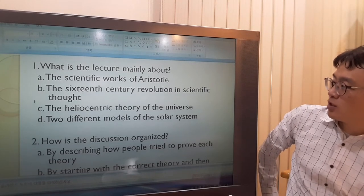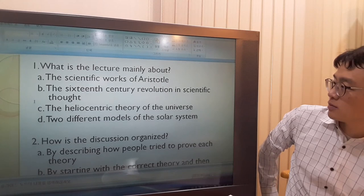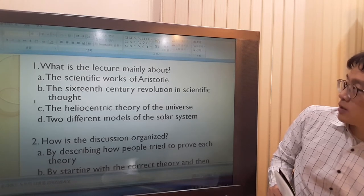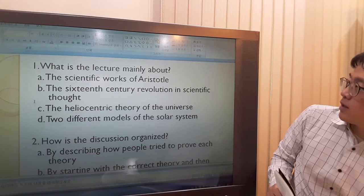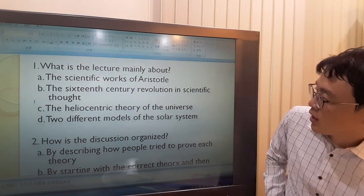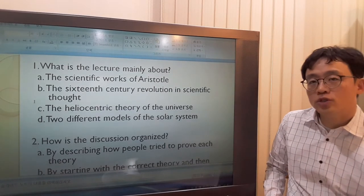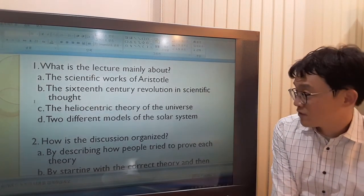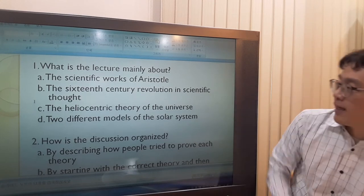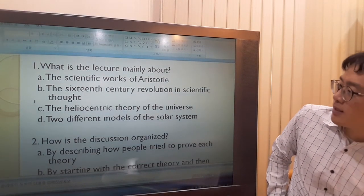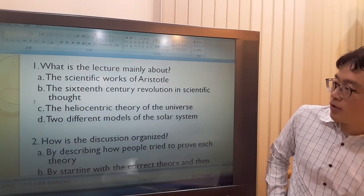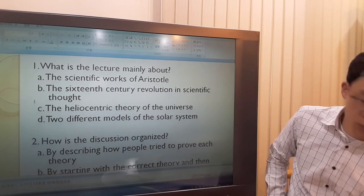B - The 16th century revolution in scientific thought. 16th century was the period, the time when people started to challenge the geocentric model, but this is not the main topic. Revolution is an important change. It originally means a successful attempt by a large group of people to change the political system by force. C - The heliocentric theory of the universe. This is just one part. The other part, which has the same importance, was the geocentric one.